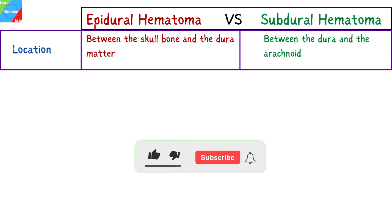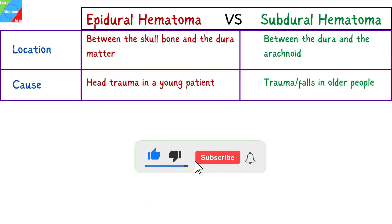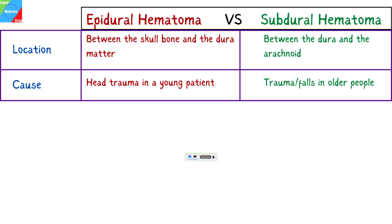The typical presentation of epidural hematoma is a young patient involved in head trauma, either during sport or as a result of a motor vehicle accident. Subdural hematoma occurs mostly in adults and is frequently due to falls, and there may not be a clear history of trauma.